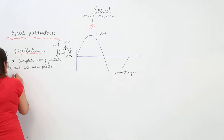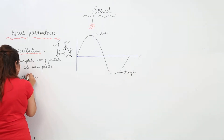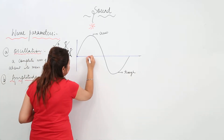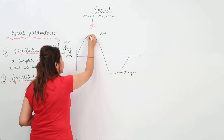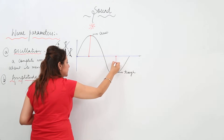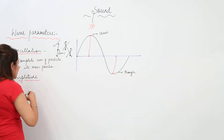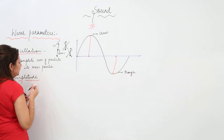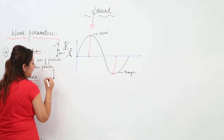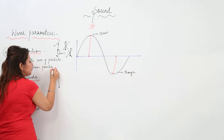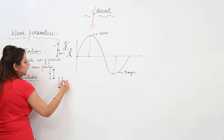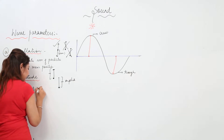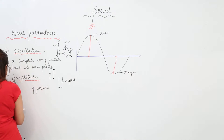The second parameter is amplitude. Suppose I have a particle — amplitude is the peak height showing how much the particle can move up, and the maximum height it can reach downward. So amplitude is the maximum displacement of particle from its mean position, either in the upward direction or in the downward direction. In both cases it is called amplitude.